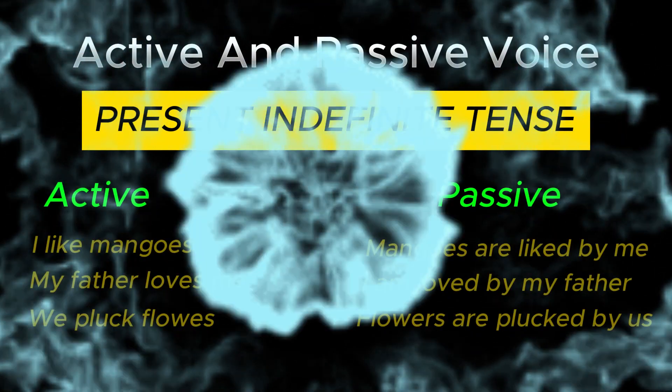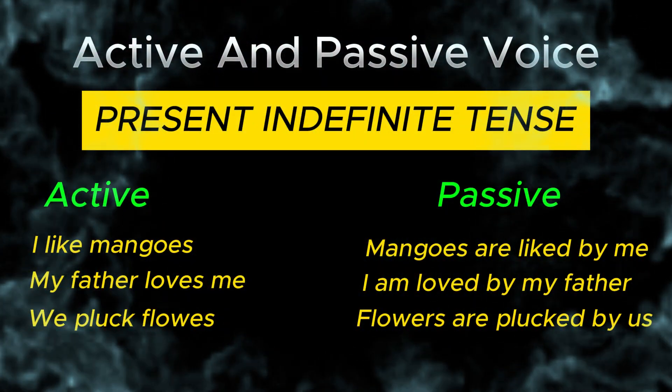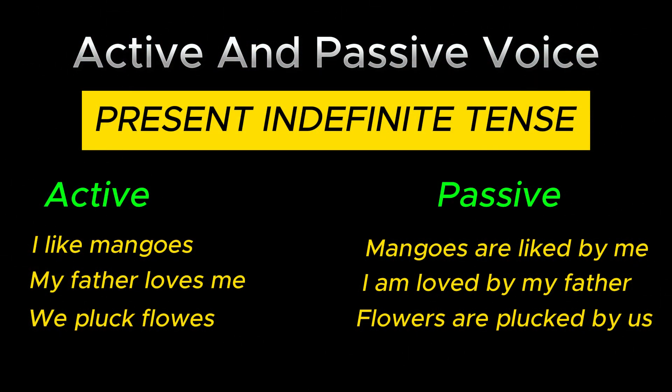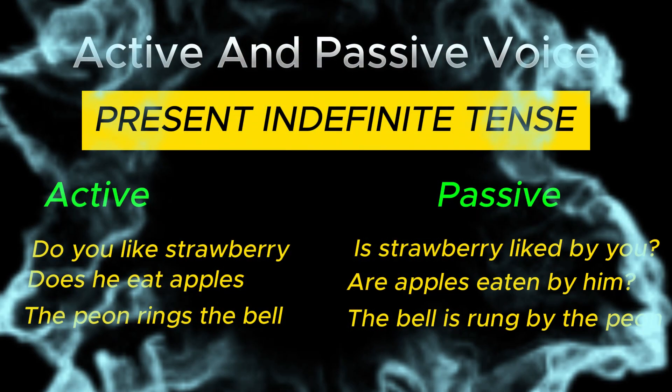I like mangoes. → Mangoes are liked by me. My father loves me. → I am loved by my father. We pluck flowers. → Flowers are plucked by us.